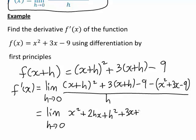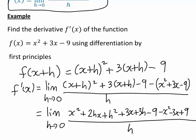Then minus 9 here, and then minus x² minus 3x plus 9 when we simplify that last part there, and that's all divided by h.